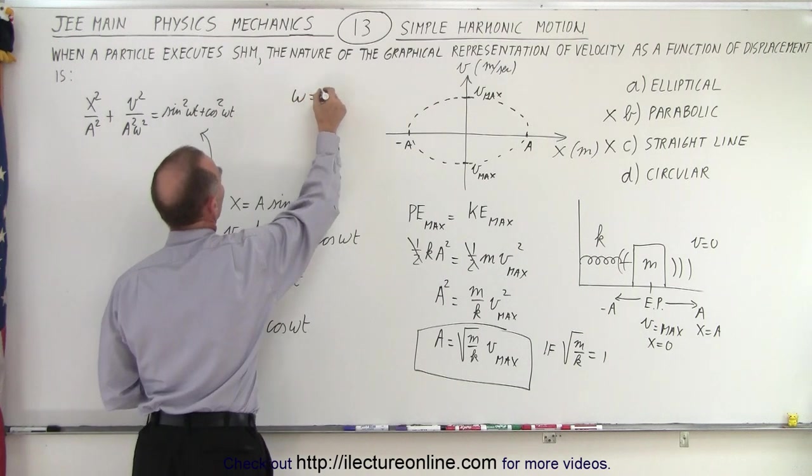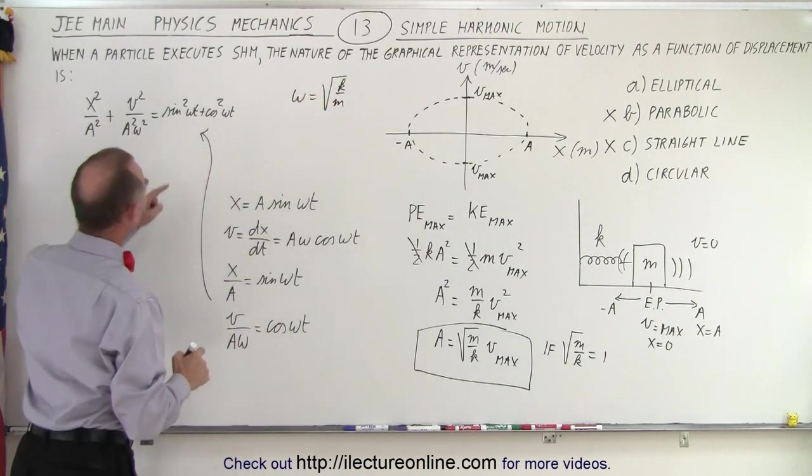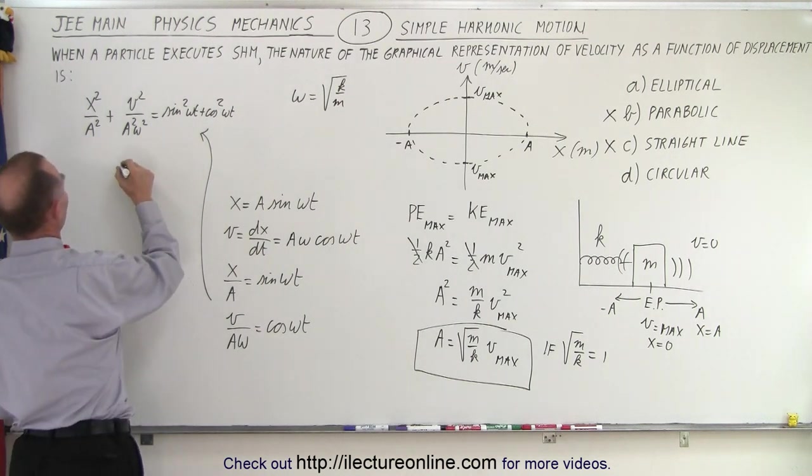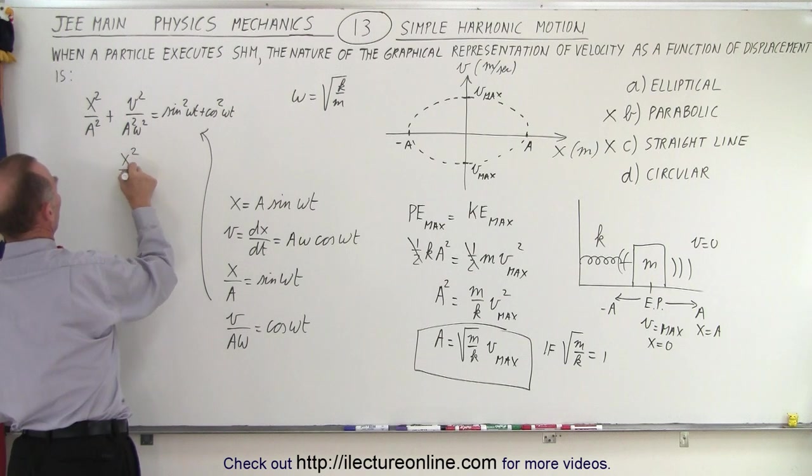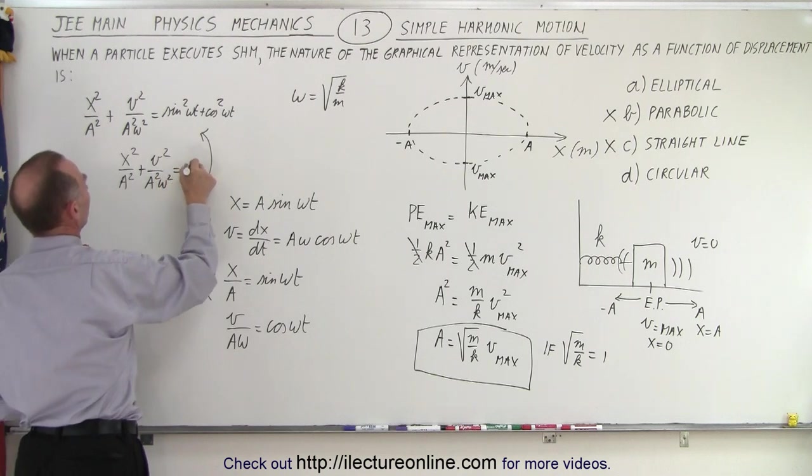So we said that omega equals the square root of k over m. And of course we know that this must be equal to 1, so that means that we have x squared over a squared plus v squared over a squared omega squared is equal to 1.